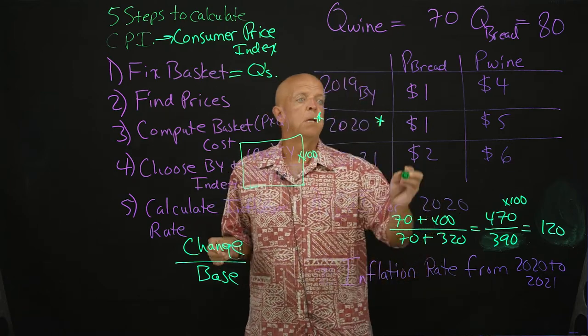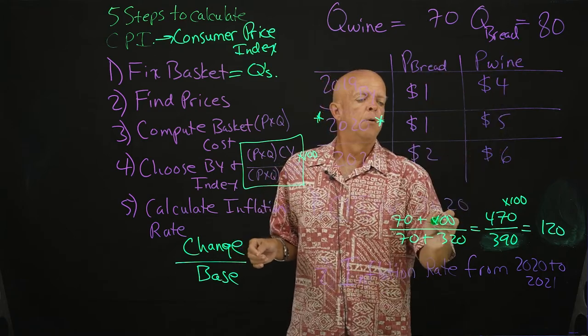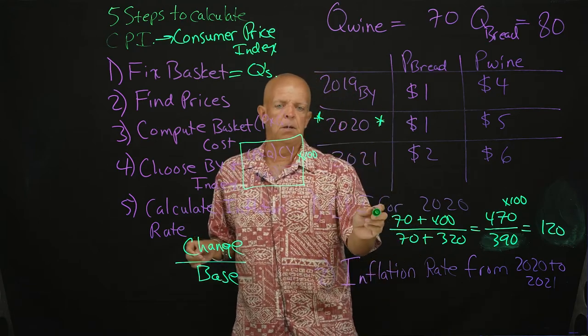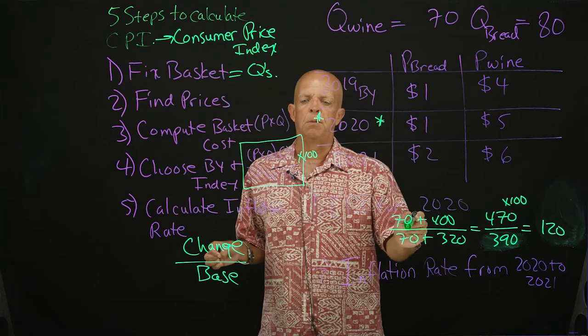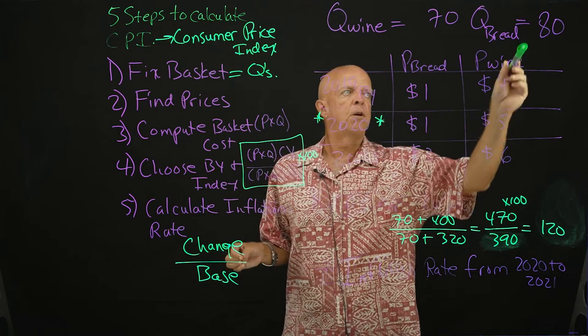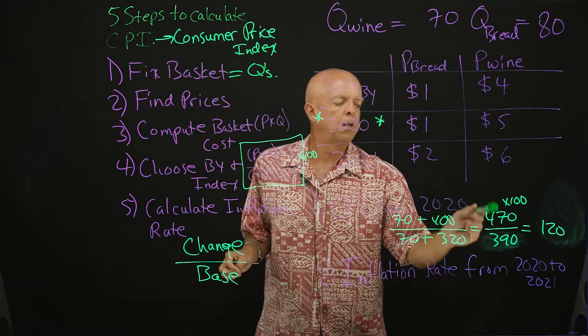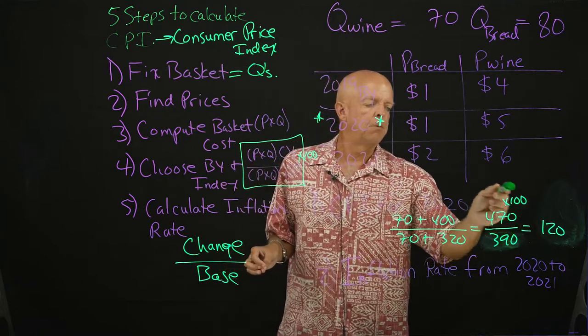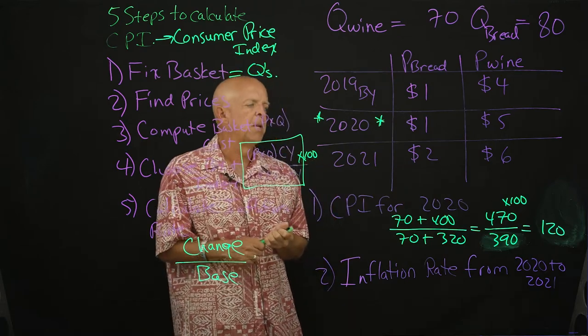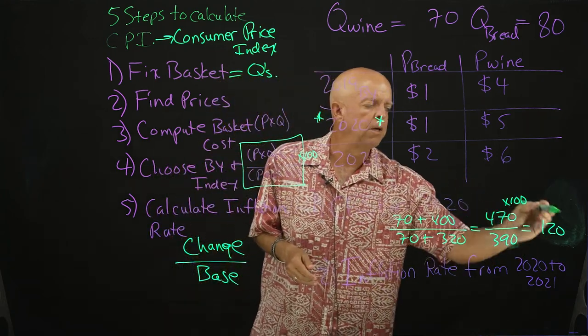So it's going to be 470 over... The CPI for 2020 is the current year price times quantity which is 70 plus 400 gives us 470. So it would be 1 times 70, 5 times 80 plus 400 gives us 470. And it will be the base year price times quantity which is going to be 1 times 70 plus 4 times 80. 70 plus 320 is 390. 470 divided by 390 gives us 120. Times it by 100 gives us 120. If you don't times it by 100 it will be 1.2, but with these index numbers we always want to multiply by 100 to give us a three digit number.